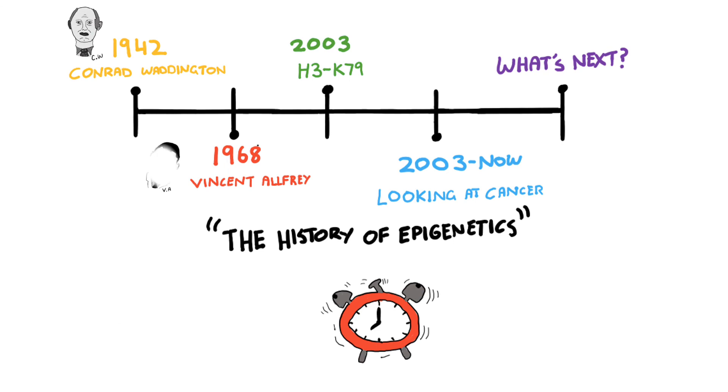Through Waddington and Alfre's work, our knowledge of gene regulation was advanced. Strohl and his colleagues then advanced our knowledge of H3K79 and position effect variegation, with potential research into oncology. In a relatively new area of genetics, the burning question is, what's next?